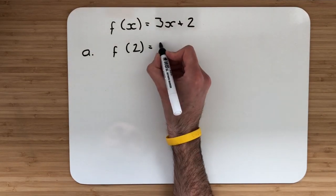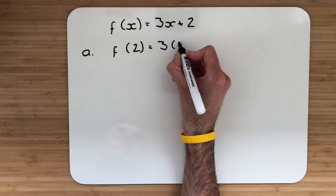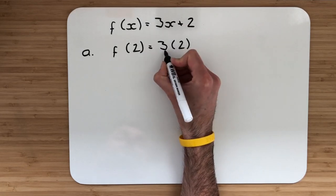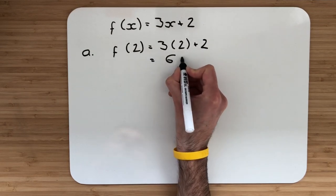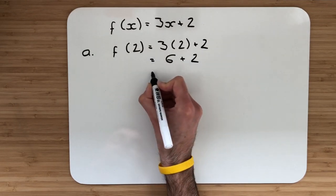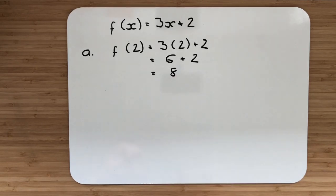So that just happens in our function. Wherever there's an x, let us replace it with 2. So 3 multiplied by 2, add the 2, leaves me 6, add 2, to give me 8.